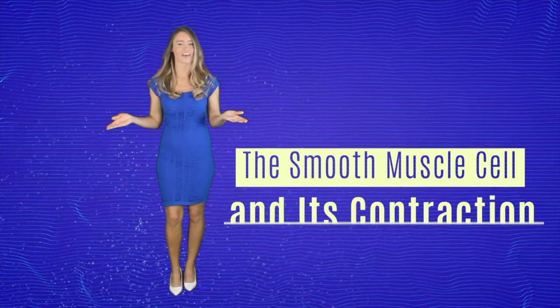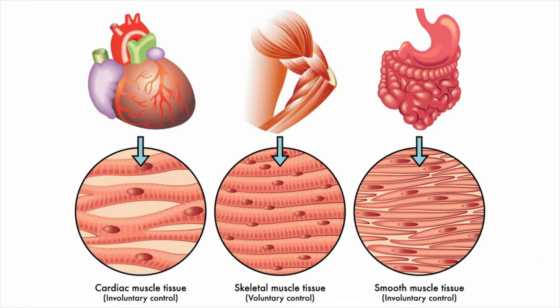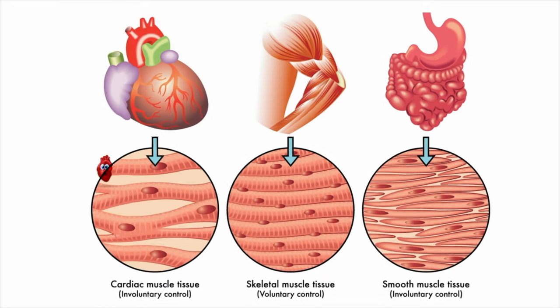The smooth muscle cell and its contraction. As we may all be aware of, there are three types of muscle cells in the body. The smooth muscle, the cardiac muscle, and the skeletal muscle. While skeletal muscle follows our commands, the smooth and cardiac muscles don't. Otherwise, we would all be in trouble. Imagine being able to cease the beating of your heart whenever you want it. That could be disastrous.